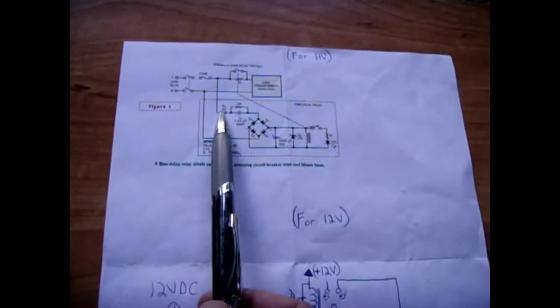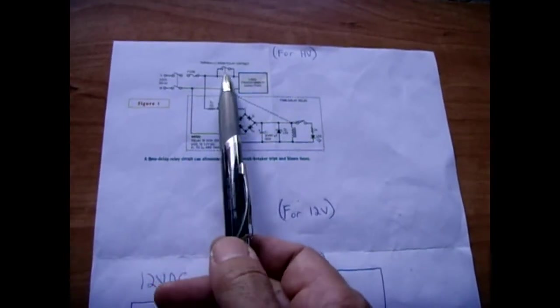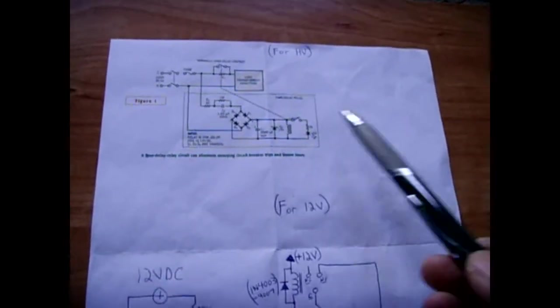Once power is applied, this load comes on and it takes a little bit of time for this circuit here to develop enough current to have this relay activate. Once this relay activates, then this resistor here is effectively bypassed and you have full current.